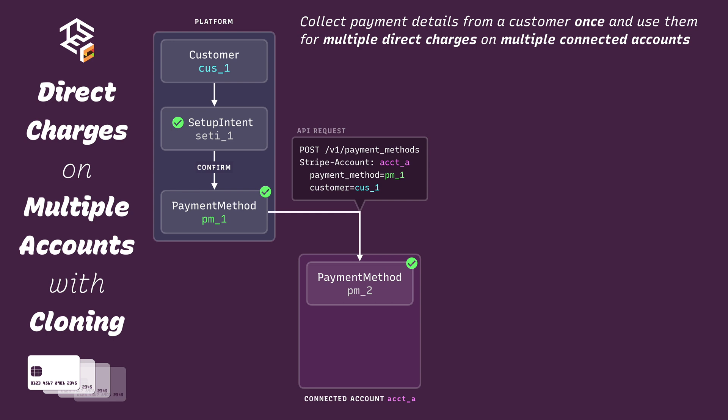Like PM1 on the platform, this new payment method, PM2, represents the same payment information, but other than that, it's an entirely new and independent object. We can now use this cloned payment method to create a direct charge on the connected account by creating and confirming a payment intent. Note the cloned payment method on the connected account inherited the setup for future use performed by the setup intent on the platform. This means there's no need to set it up again on the connected account.